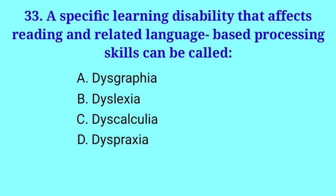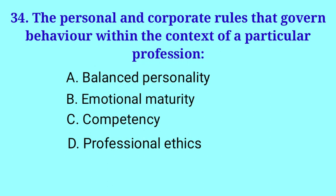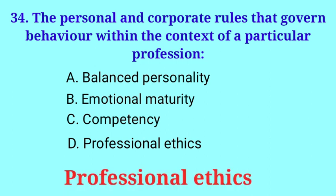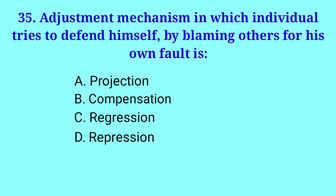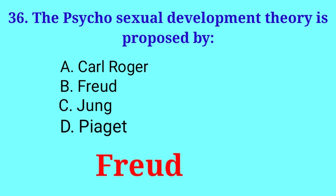A specific learning disability that affects reading and related language-based processing skills can be called Dyslexia. The personal and corporate rules that govern behavior within the context of a particular profession. Answer: Professional Ethics. Adjustment mechanism in which an individual tries to defend himself by blaming others for his own fault is Answer: Projection. The psycho-sexual development theory is proposed by Freud.